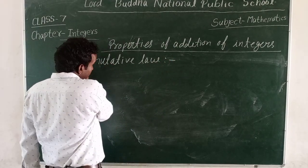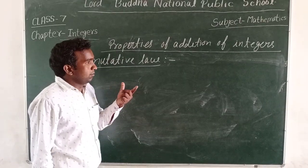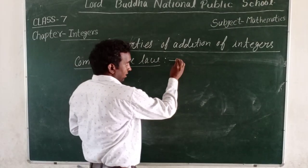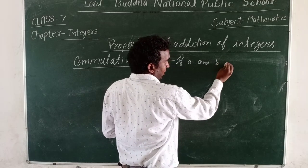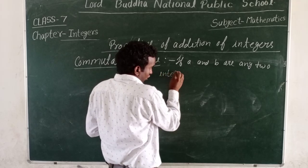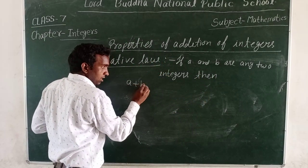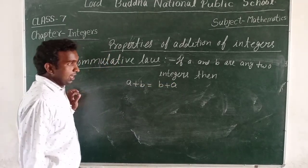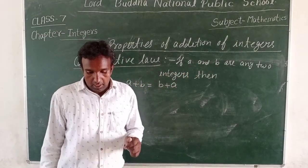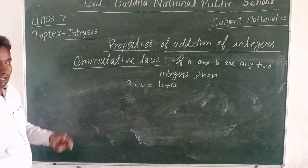The second property is the commutative law. If A and B are any two integers, then A plus B is equal to B plus A. This is the commutative law.